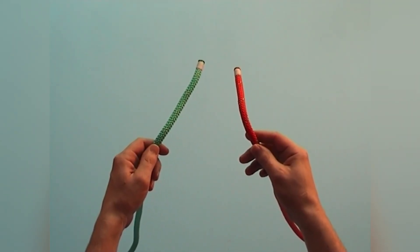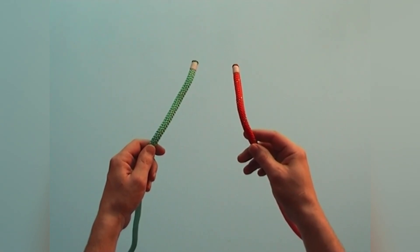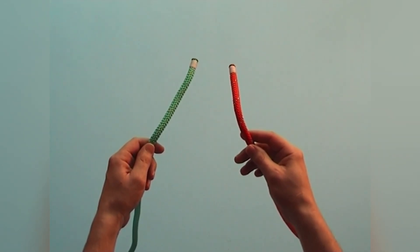Two ropes can be joined in a very secure manner using scaffold knots. This connection is also called a double fisherman's bend.